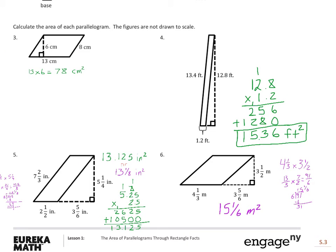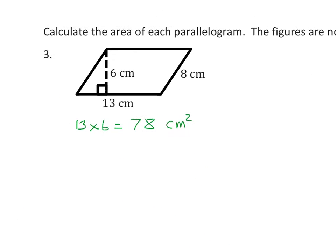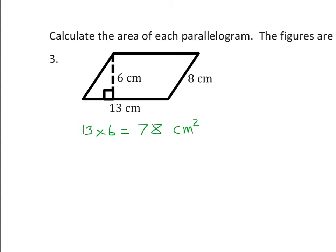Let's check the answers — hopefully you already worked these. For number 3, we don't need the diagonal side length; that's not the height. We only need the base — the bottom line parallel to the top — and the 90-degree height. So we calculate 13 times 6, and our label will be centimeters squared, because centimeters times centimeters equals centimeters squared.